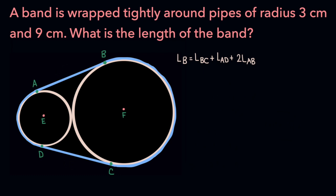Now let's draw lines connecting the center of the circles to the interesting points on that circle. So we would draw the line AE, DE, BF, and CF.